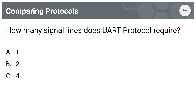Next question: how many signal lines does UART protocol require? Options are A, one; B, two; or C, four. The answer is B, two. UART has an RX line and a TX line.